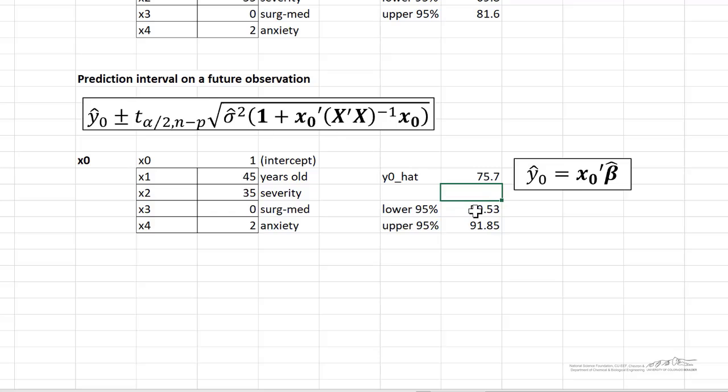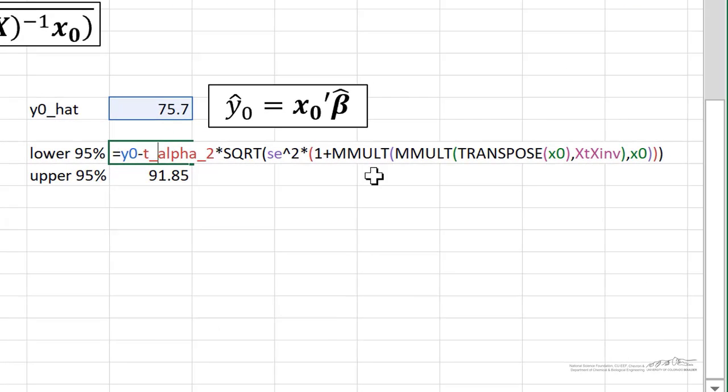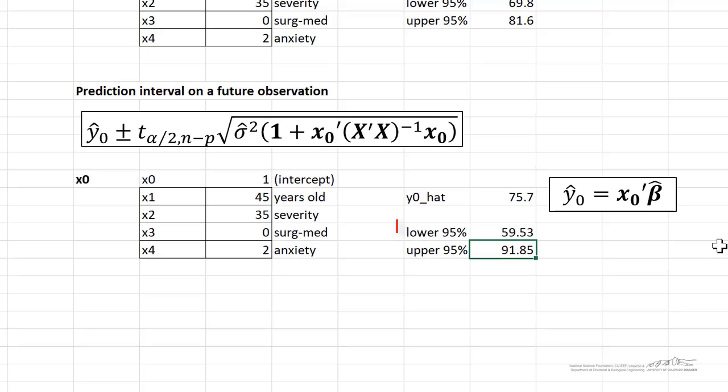And then we can use this formula here again with a bunch of messy functions in here. You can look at that later on. And we get our lower and upper 95% prediction intervals. And again, it doesn't have to be 95. We could do 98, 99, 90, and so on.